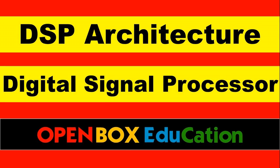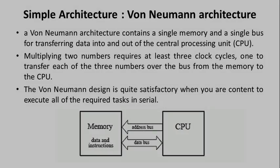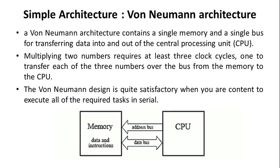Welcome to OpenBox Education. Von Neumann architecture contains a single memory and a single bus for transferring data into and out of the central processing unit CPU. Multiplying two numbers requires at least three clock cycles, one to transfer each of the three numbers over the bus from the memory to the CPU. The Von Neumann design is quite satisfactory when you are content to execute all of the required tasks in serial.